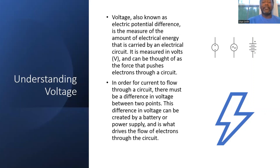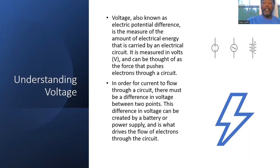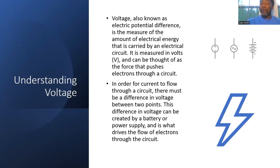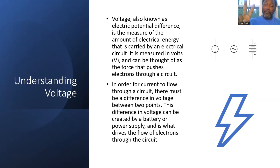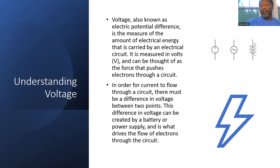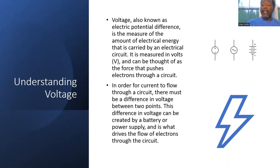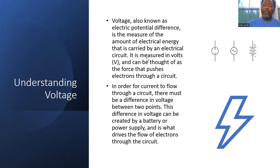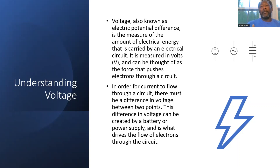Voltage in an electrical circuit is known as potential difference — it's electrical pressure. Voltage pushes electrons through a conductor so they can pass through a load and do work: powering lights, computers, phones, and other devices. There are two types of voltage: DC voltage provides direct current that flows in one direction, while AC voltage provides alternating current — in the U.S., at 60 hertz or 60 cycles per second.